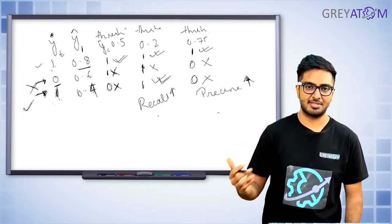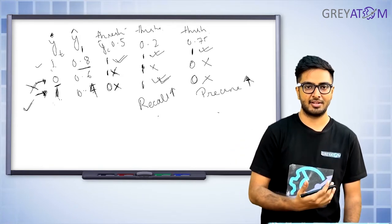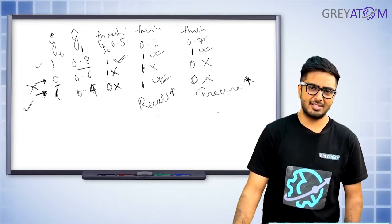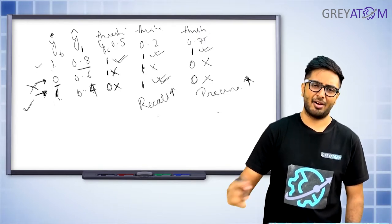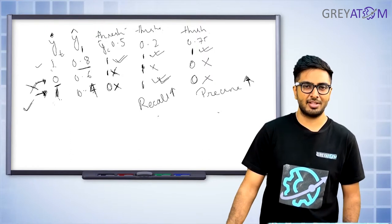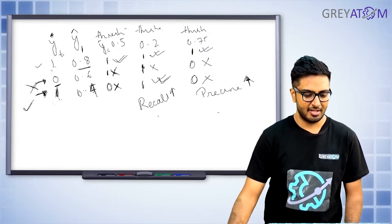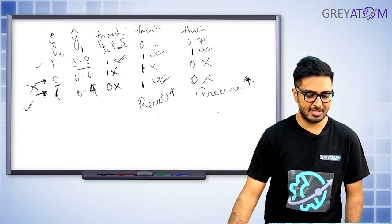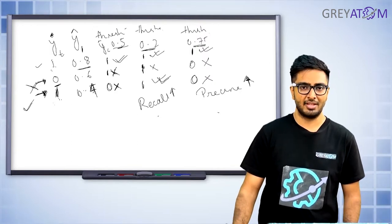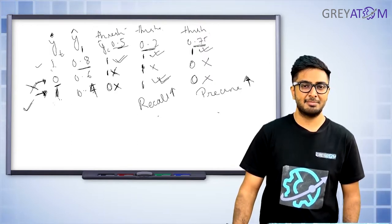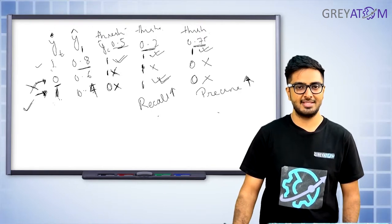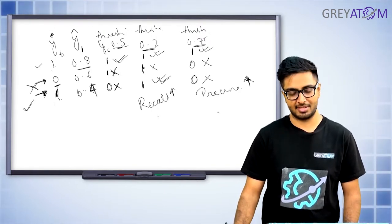In the same model by changing the threshold you get high recall in one case and high precision in another. This is the precision-recall trade-off, which is why we use F1 score. But F1 score just measures them — it doesn't tell you how to choose the right threshold. How do you choose the right threshold? That is a business call, and a very easy way to help with that is called AUC.